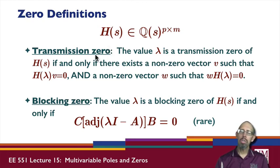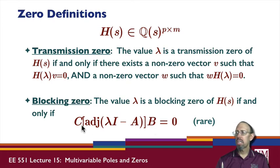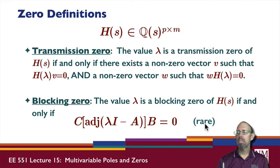A blocking zero: lambda is a blocking zero if and only if the numerator of the transfer function matrix evaluated at lambda equals zero — that is, plugging lambda in gives an entire matrix of zeros. This is very rare but it has a name: the blocking zero.